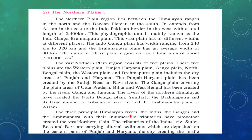There are three principal Himalayan rivers you must remember: Indus, Ganga, and Brahmaputra. They are the main rivers because many tributaries join them. The tributaries of the Indus are Satlaj, Beas, and Ravi, and they carry alluvial sediments. These sediments have been deposited in the eastern parts of Punjab and Haryana.